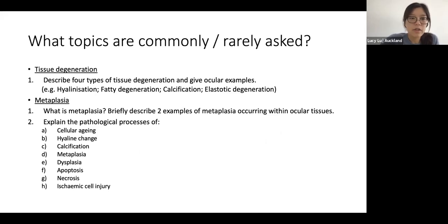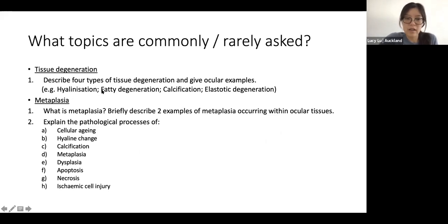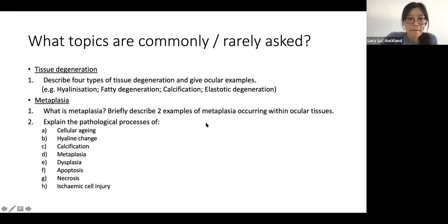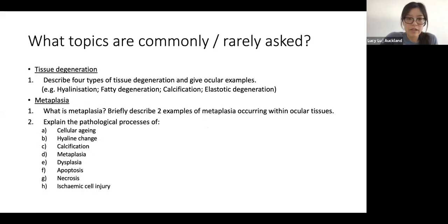For tissue degeneration, the most common question asked is to describe tissue degeneration, give four types, and give ocular examples. The best answers describe those four types. For metaplasia, it's mainly definition-based with a few ocular examples. There are also lots of questions just explaining pathological processes and defining different terms — I think that's the trickiest part, knowing different definitions and examples of all these terms that sound a bit similar.